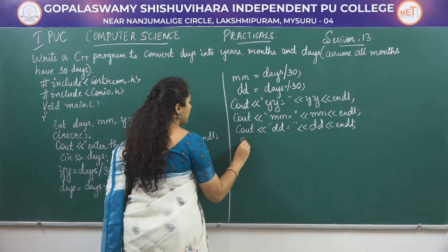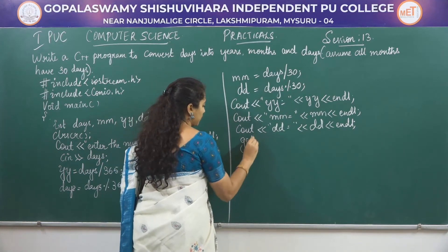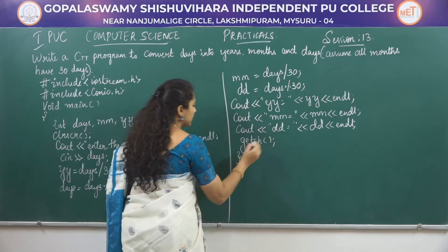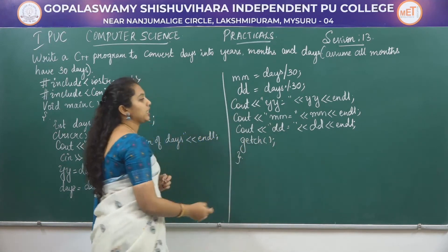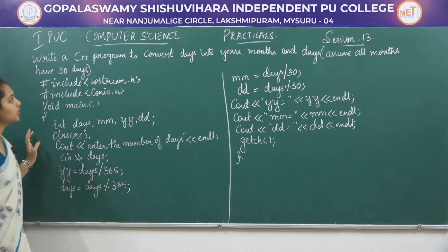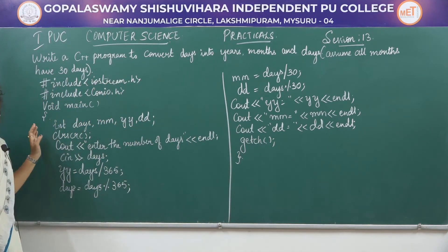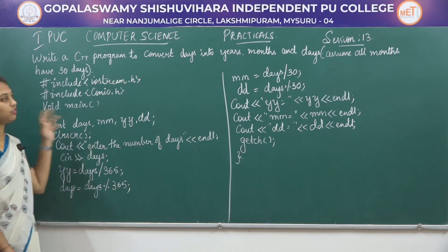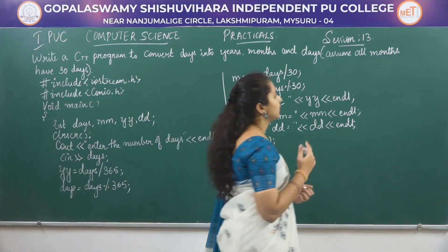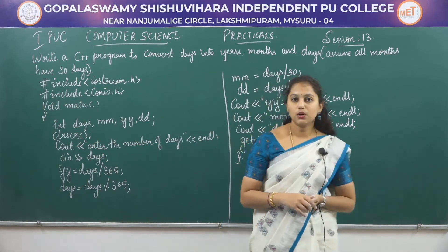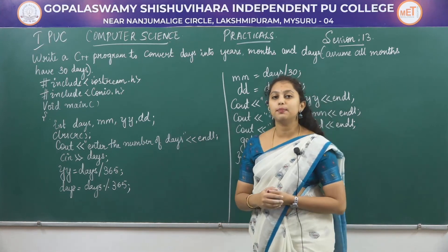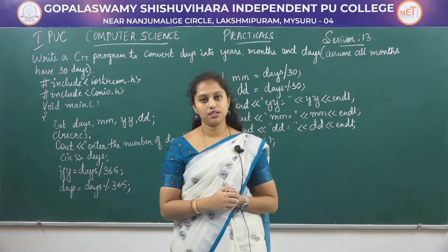The getch function is used to hold the output screen until the user presses any key on the keyboard. This completes the C++ program to convert the given days into years, months, and days. Now let's see how to execute this program in Turbo C++.